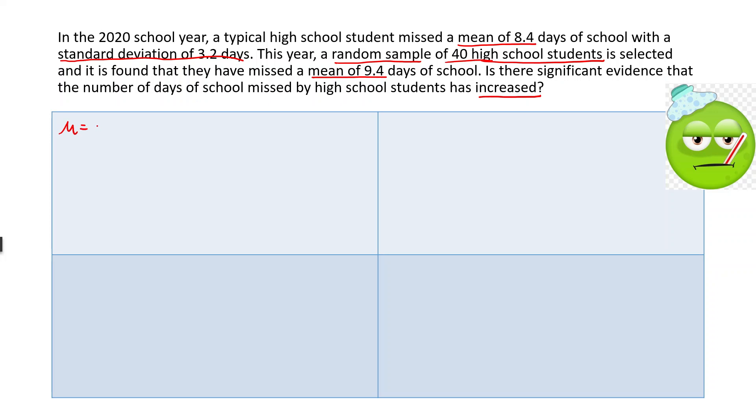First things first, we are talking about the true mean days of school missed by high school students. Our null hypothesis is that the mean has not changed from the previous year, in which case it was 8.4. Our alternative is that the mean has increased, so mu is greater than 8.4. We've got some other information here. We've got a standard deviation of 3.2, a sample mean of 9.4, and we've got a sample size of 40. And we don't have alpha, so we'll put 0.05.